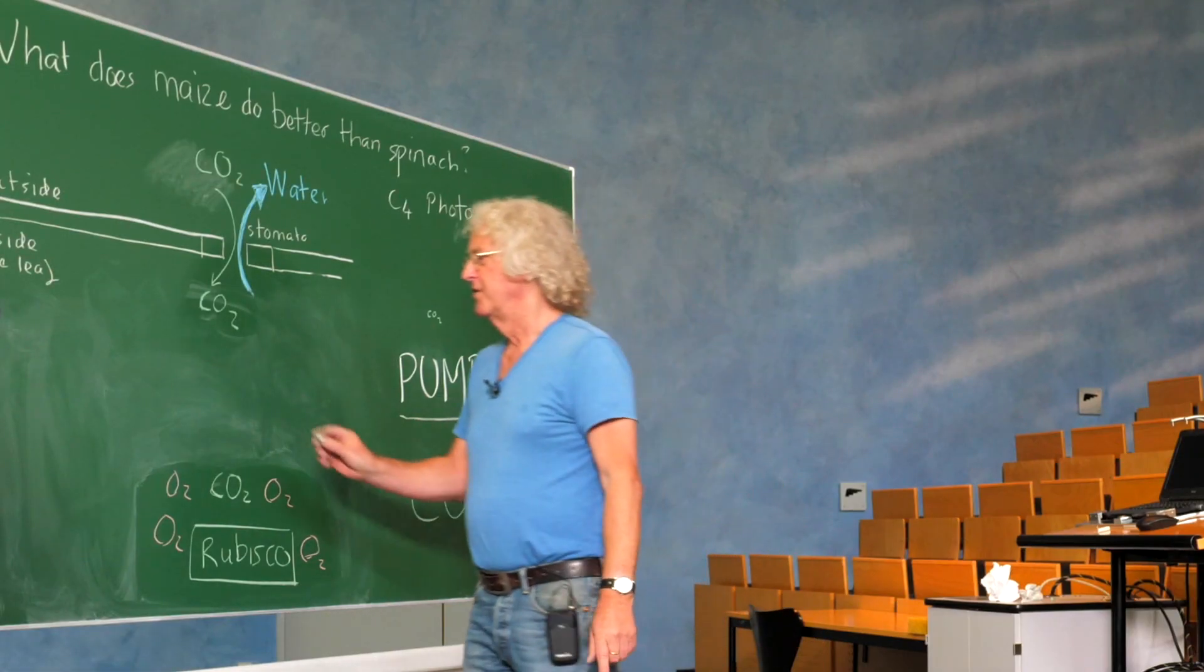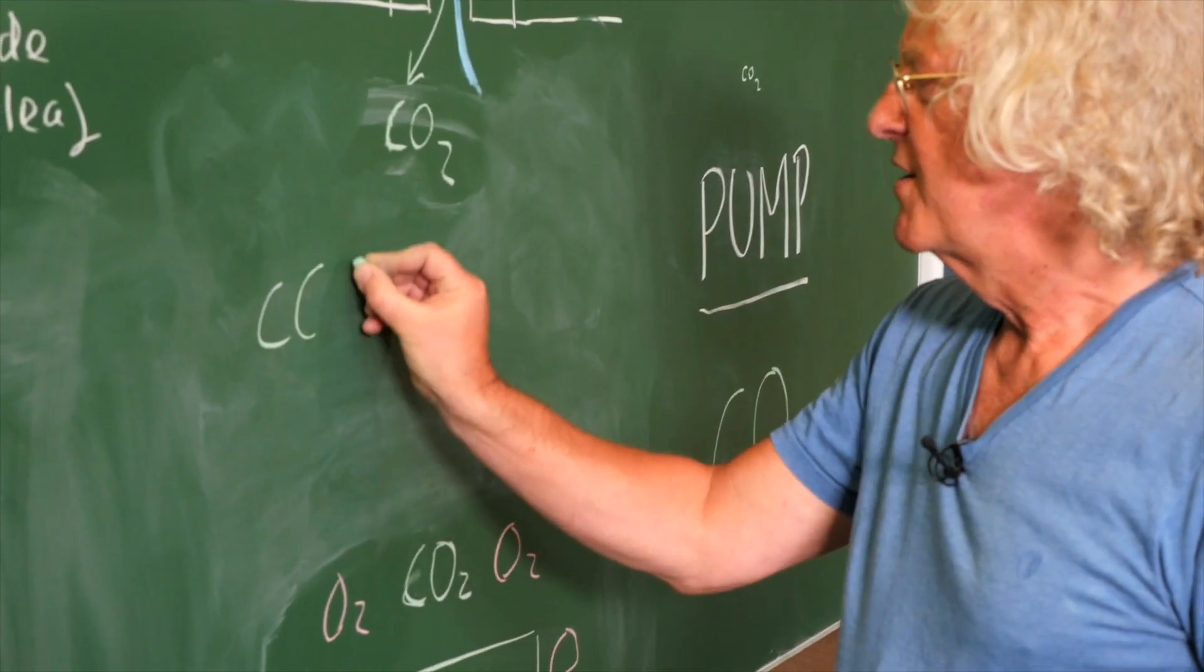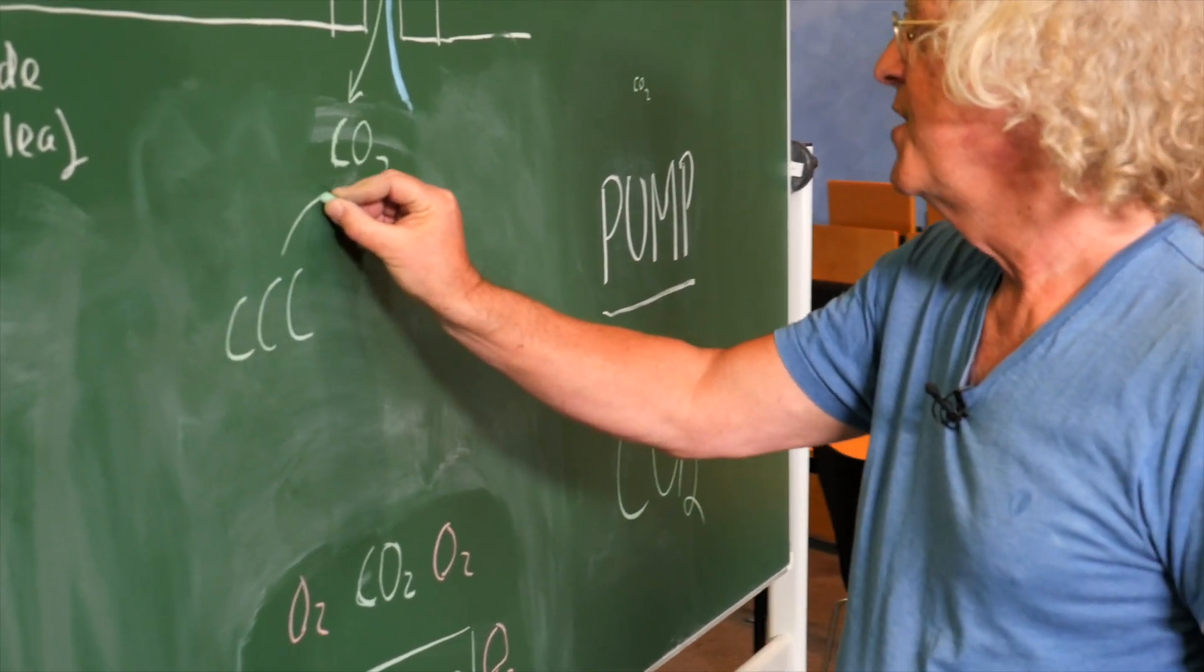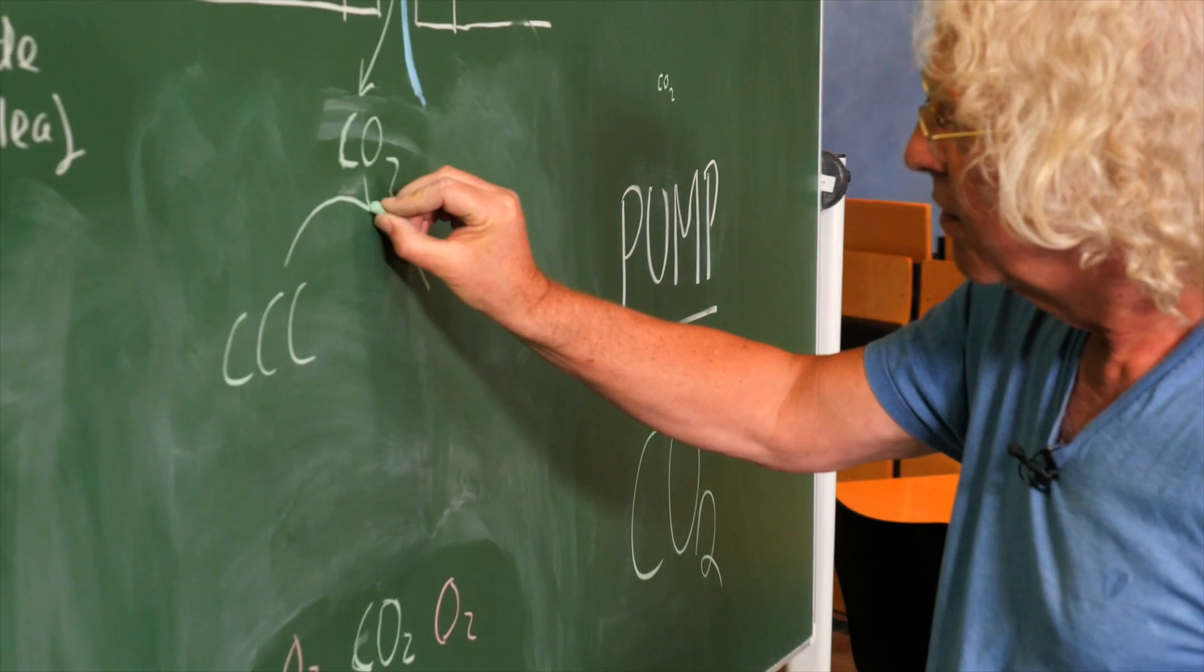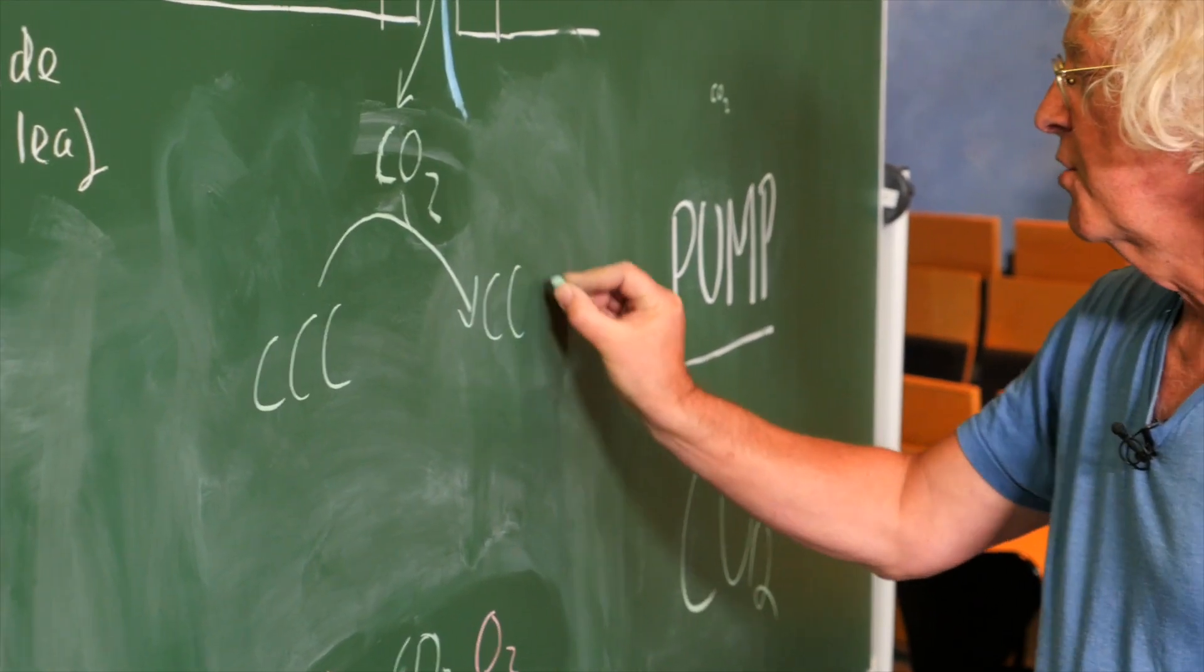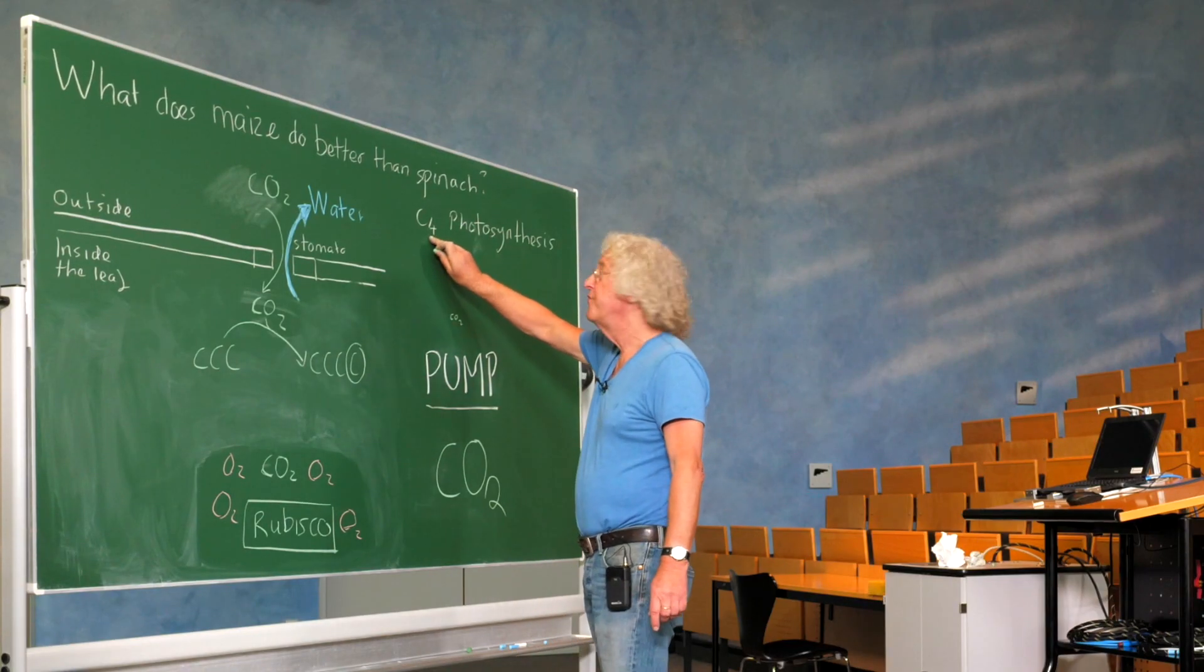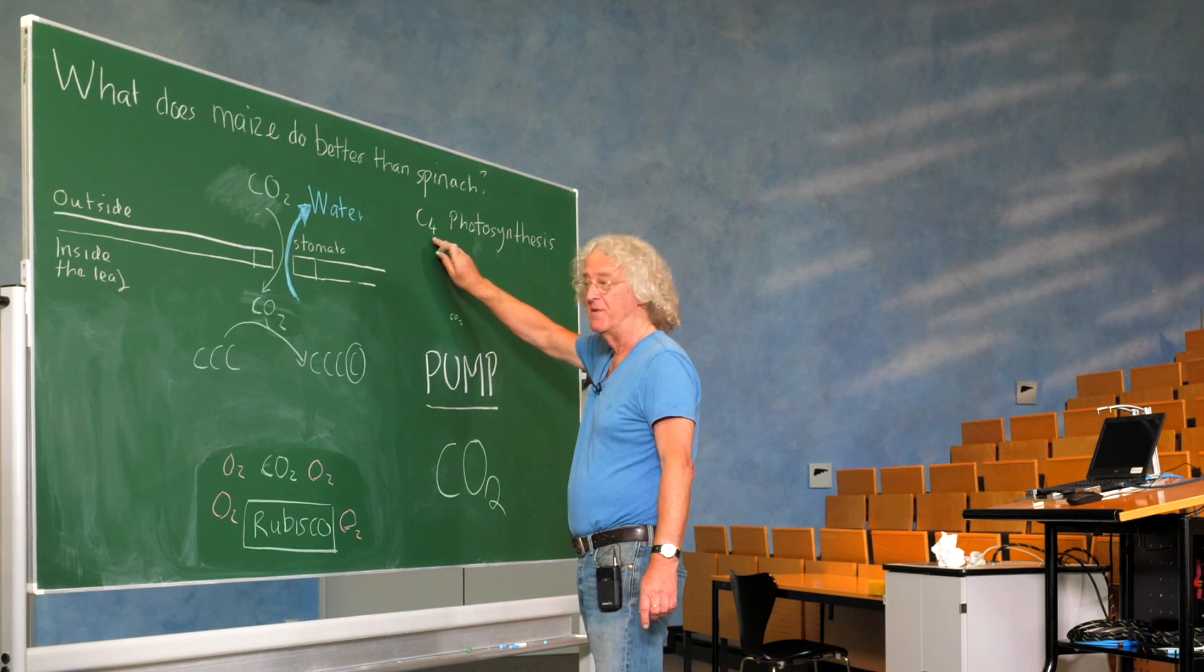What maize does is it has a reaction where it takes a compound with three carbons, which reacts with carbon dioxide to make a compound with four carbons. This is why it's called C4 photosynthesis, four carbon.